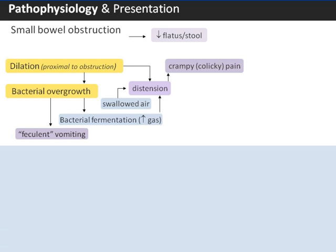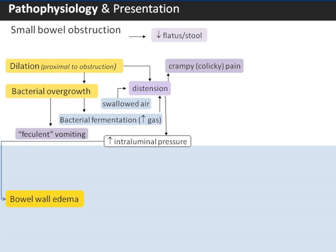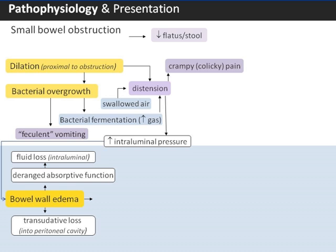Such overgrowth may lead to the so-called feculent vomiting characteristic of high-grade or complete distal mechanical small bowel obstruction. Small bowel distension can increase intraluminal pressure, compressing mucosal lymphatics and creating bowel wall edema. Normal small bowel absorption becomes dysfunctional, and with ongoing intraluminal hydrostatic pressures, increased pressure in capillary beds can lead to massive loss of fluid, electrolytes, and proteins into the lumen. Transudative losses into the peritoneal cavity may also occur.